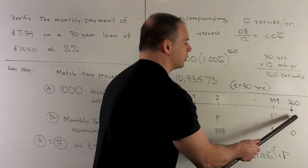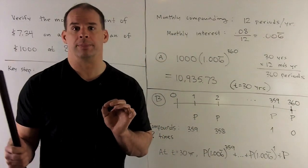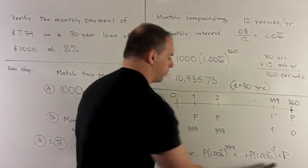And that's just going to be equal to P with no interest accumulated at all on it. So we're going to take this term, set it equal to this term.